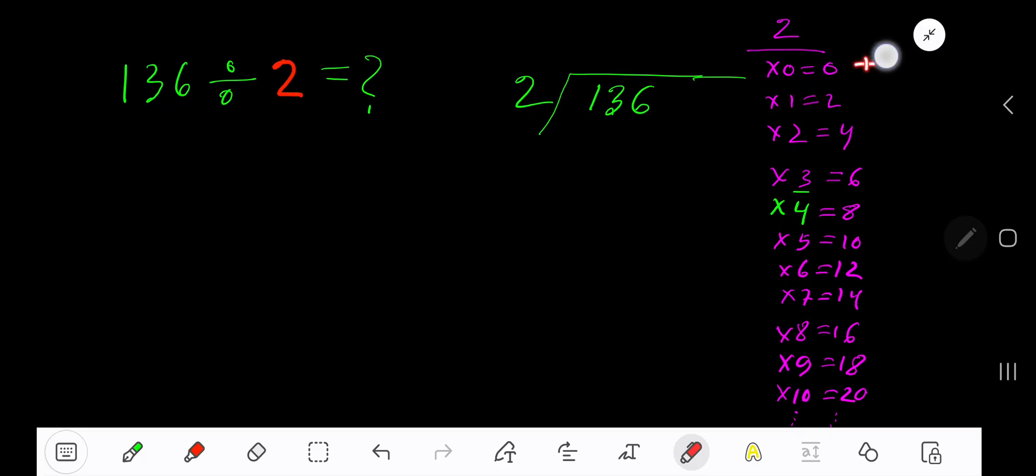To find the multiplication table of 2 easily, just start with the previous step: 0 plus 2 is 2, 2 plus 2 is 4, 4 plus 2 is 6, 6 plus 2 is 8, 8 plus 2 is 10, 10 plus 2 is 12. This process will continue. 2 goes into 1 how many times? 0 times.